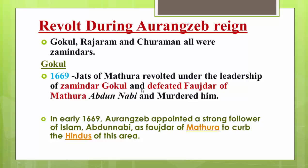Although the overall revolt was crushed, the Jat community itself was not crushed. Famous zamindars like Gokul, Raja Ram, and Churaman became leaders of these revolts time and again. Gokul was a zamindar, and during the revolt of 1669 he was the leader. The Jats of Mathura revolted under the leadership of zamindar Gokul.